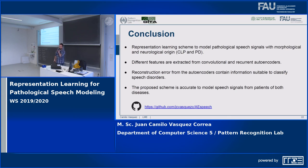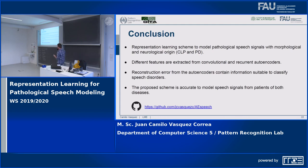In conclusion, the reconstruction error from the autoencoders contains information suitable to classify speech disorders. We found that the error is higher for cleft patients than for healthy children, especially in the higher part of the spectrum where sibilant fricative phonemes appear. We found that the error for Parkinson's patients is lower than for healthy subjects, especially in the lower frequencies. The trained models are available on GitHub to extract features for different speech disorders.